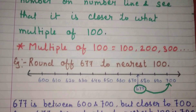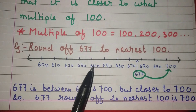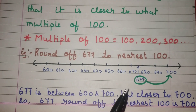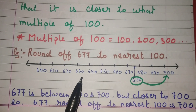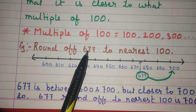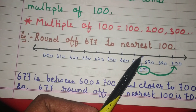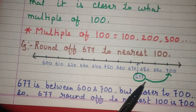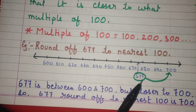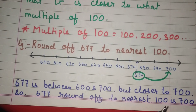Let's see an example: round off 677 to nearest 100. When we put 677 on the number line starting from 600 to 700 — 610, 620, 630, 640, 650, 660, 670, 680, 690, 700 — 677 is between 600 and 700. It is easy to see that it is closer to 700. So 677 rounded off to nearest 100 is 700.